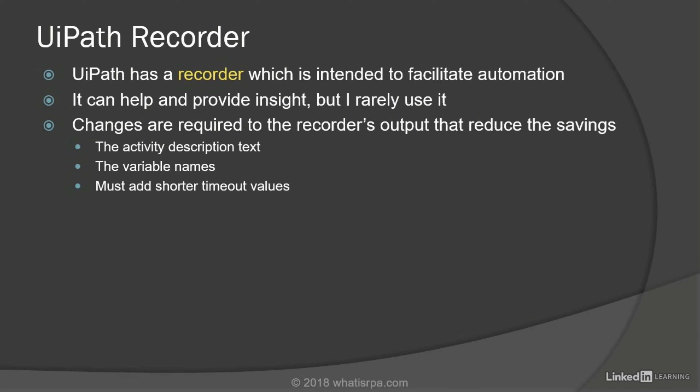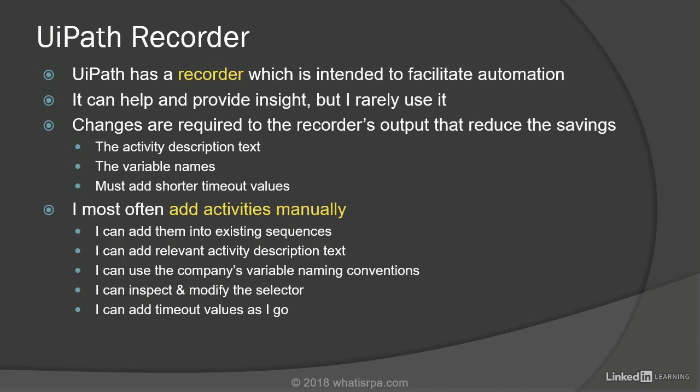Things like the activity description text, the variable names, and the fact that I have to go back and add shorter timeout values to all of the auto-generated activities kind of defeat the purpose of using the UiPath recorder. The only real benefit I get from it is if I don't know which activity to use — the recorder will choose that for me. Instead of using the recorder, I most often add activities manually because I can add them into existing sequences, add relevant description text, use my company's variable naming conventions, inspect and modify the selector, and add timeout values as I go.